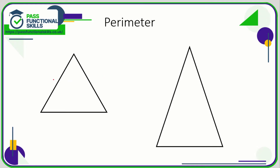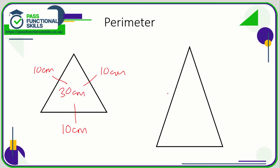With a triangle, they might tell you that the triangle is an equilateral triangle, or they might show you a triangle with dashes, which means those sides are the same length. On an equilateral triangle, all sides are equal, so if they tell you that one side is 10 centimeters, then all the sides are 10 centimeters, and the perimeter is 10 plus 10 plus 10, which is 30 centimeters.